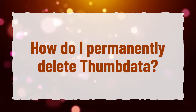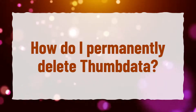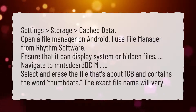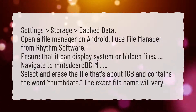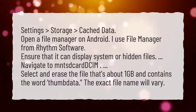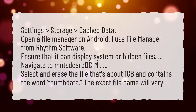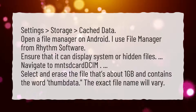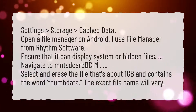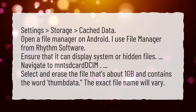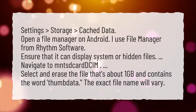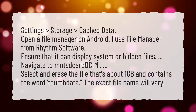How do I permanently delete thumbdata? Go to Settings, Storage, Cached Data. Open a file manager on Android — such as File Manager from Rhythm Software — and ensure that it can display system or hidden files. Navigate to MNT, SD card, DCIM. Select and erase the file that is about 1GB and contains the word THUMBDATA. The exact file name will vary.